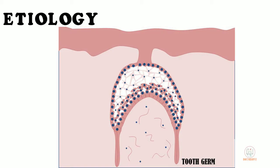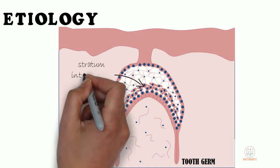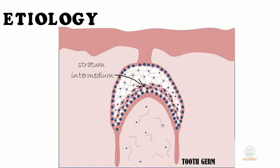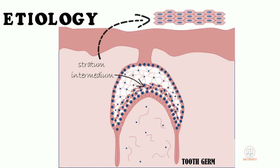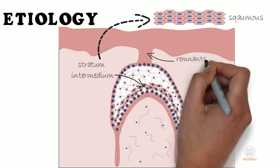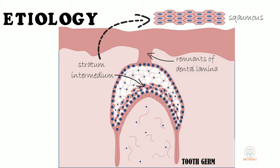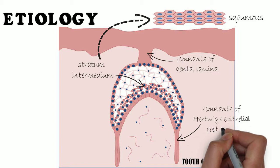Due to the presence of squamous cells in the tumour histology, CEOT is thought to originate from cells of the stratum intermedium in the enamel organ, as these are the only cells in the tooth germ which are squamous. CEOT may also develop from remnants of dental lamina or Hertwig's epithelial root sheath.